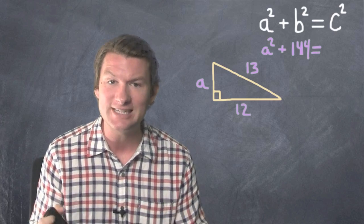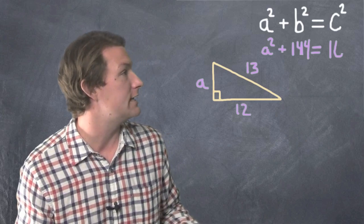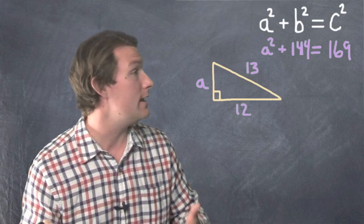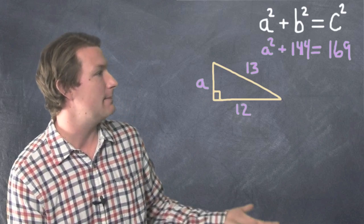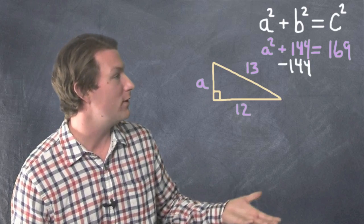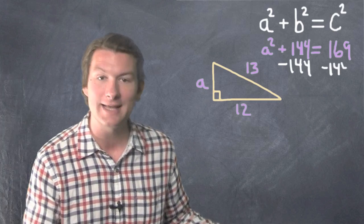Equals c squared. We know c is 13. So 13 squared is 13 times 13. That's 169. And we have, look at this, we have a simple algebra equation here. We've got a squared plus 144 equals 169. Let's get a by itself.